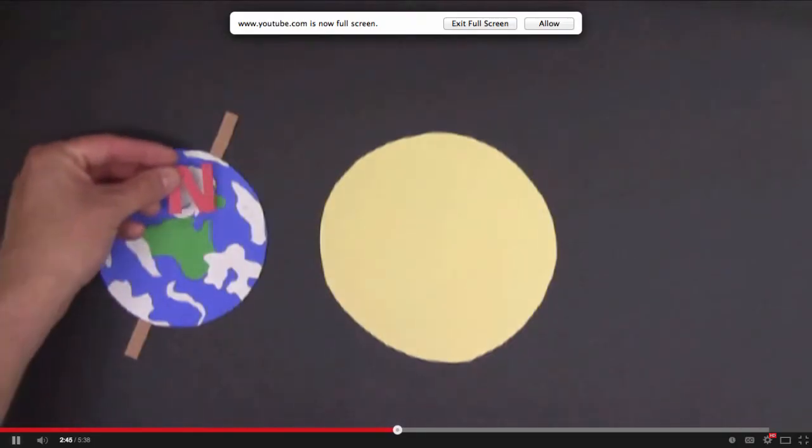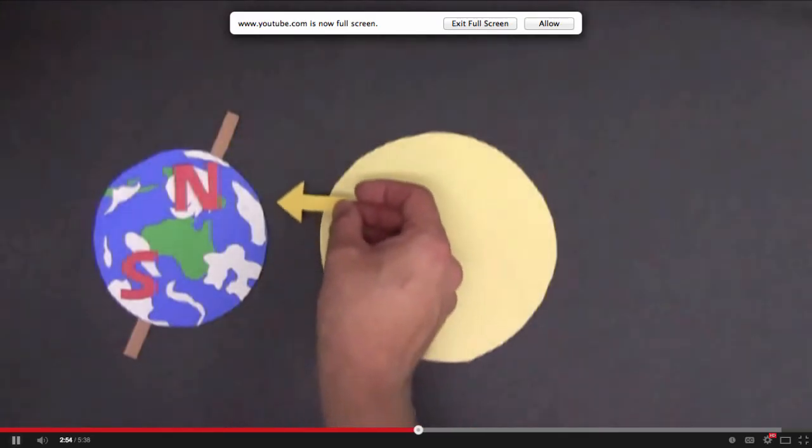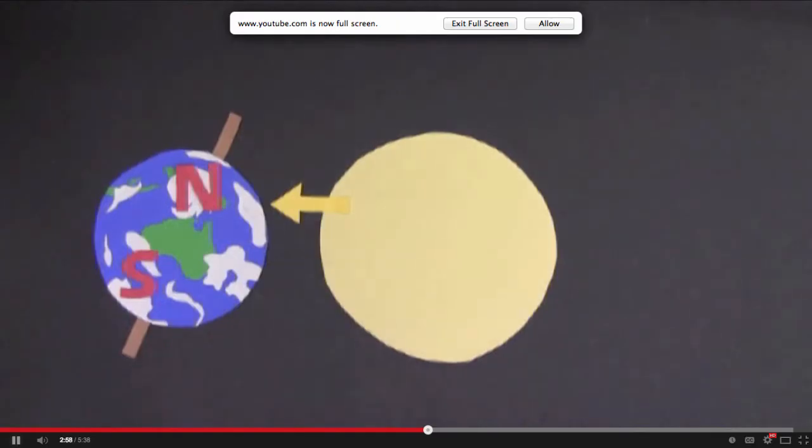So when the earth is over here, the northern hemisphere is angled towards the sun, and the southern hemisphere is angled away. When a hemisphere is angled towards the sun, the sun's rays hit it directly. That's what's happening in the northern hemisphere here. But when a hemisphere is angled away from the sun, like the southern hemisphere here, the sun's rays hit it indirectly.